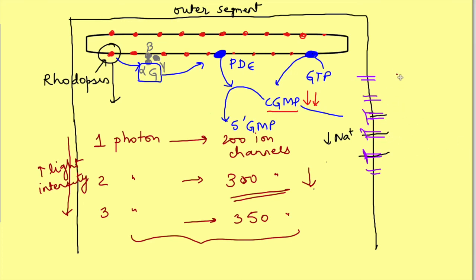This happens because these sodium channels also allow entry of calcium ions. When the channels close in response to light, calcium entry also decreases. This leads to decrease in intracellular calcium levels. Now, normally, calcium has many roles inside the photoreceptors. It inhibits the activity of guanyl cyclase.